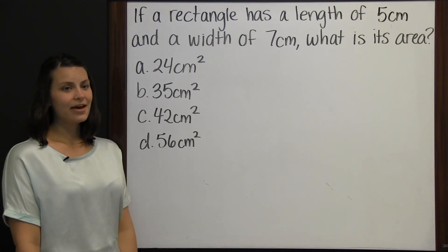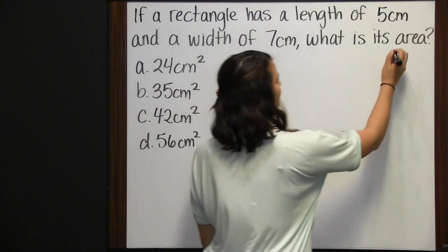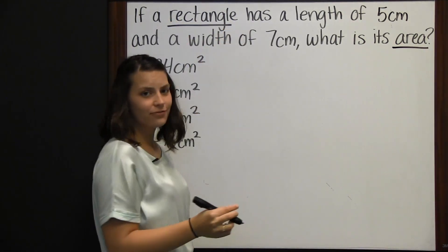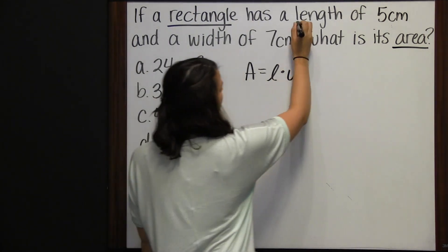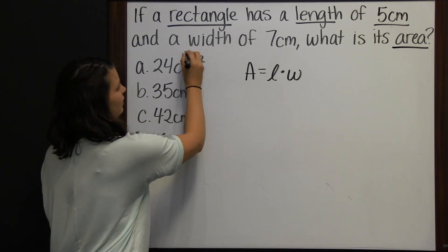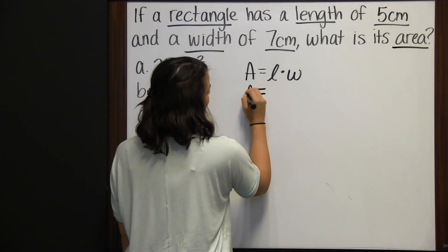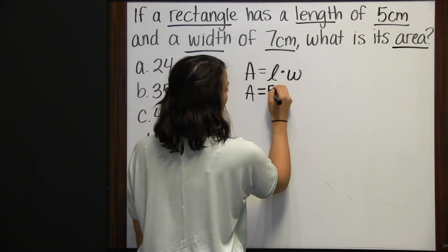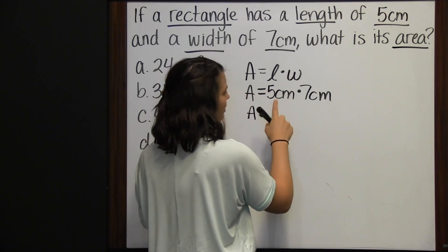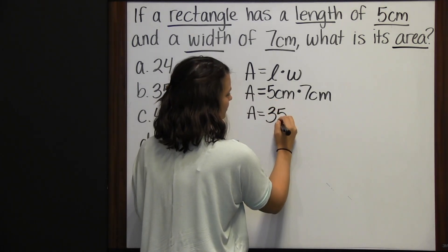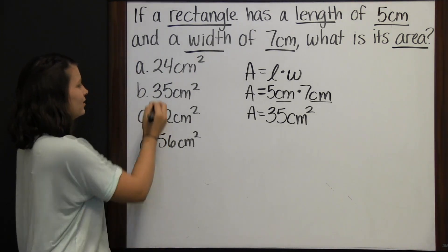If a rectangle has a length of 5 centimeters and a width of 7 centimeters, what is its area? The formula for area of a rectangle is length times width. Substituting: area equals 5 centimeters times 7 centimeters. 5 times 7 is 35, and centimeters times centimeters is centimeters squared. So the area is 35 centimeters squared, answer choice B.